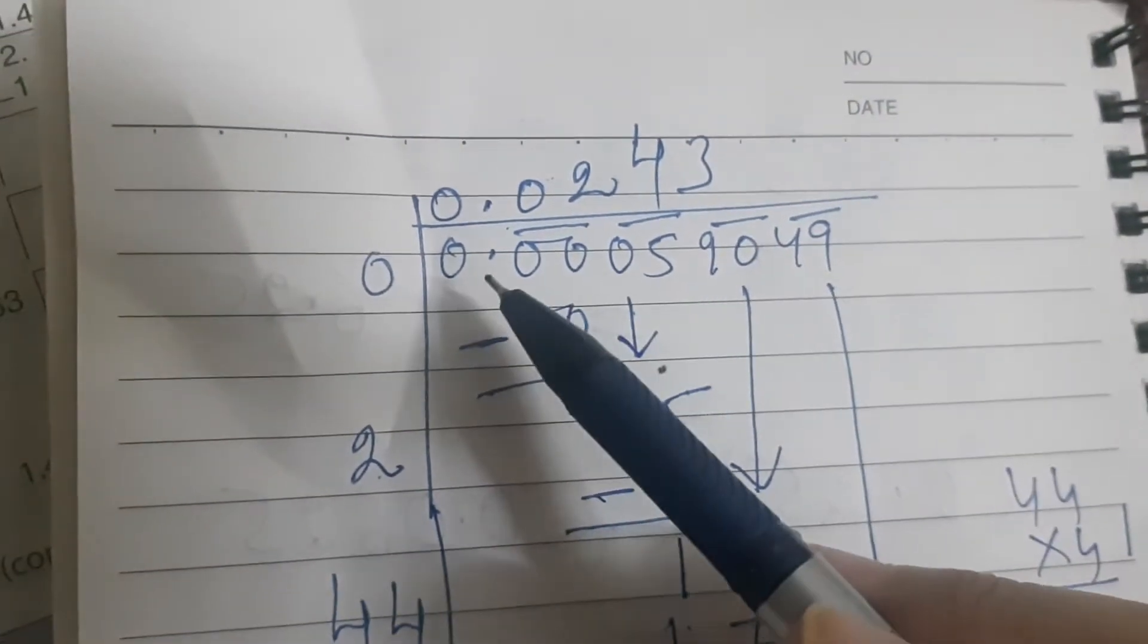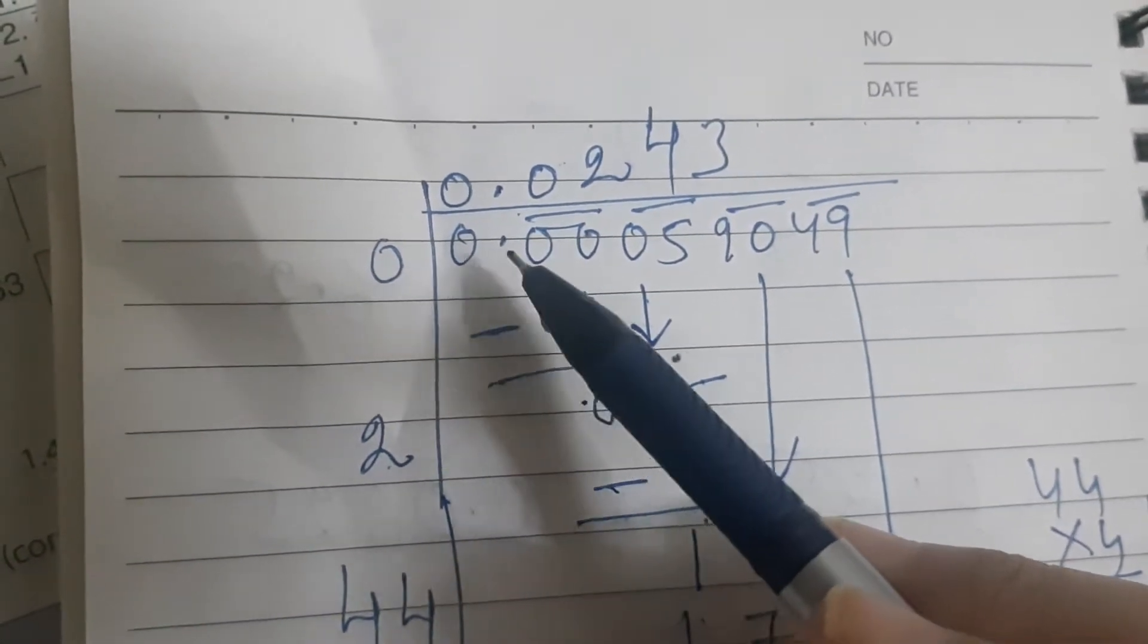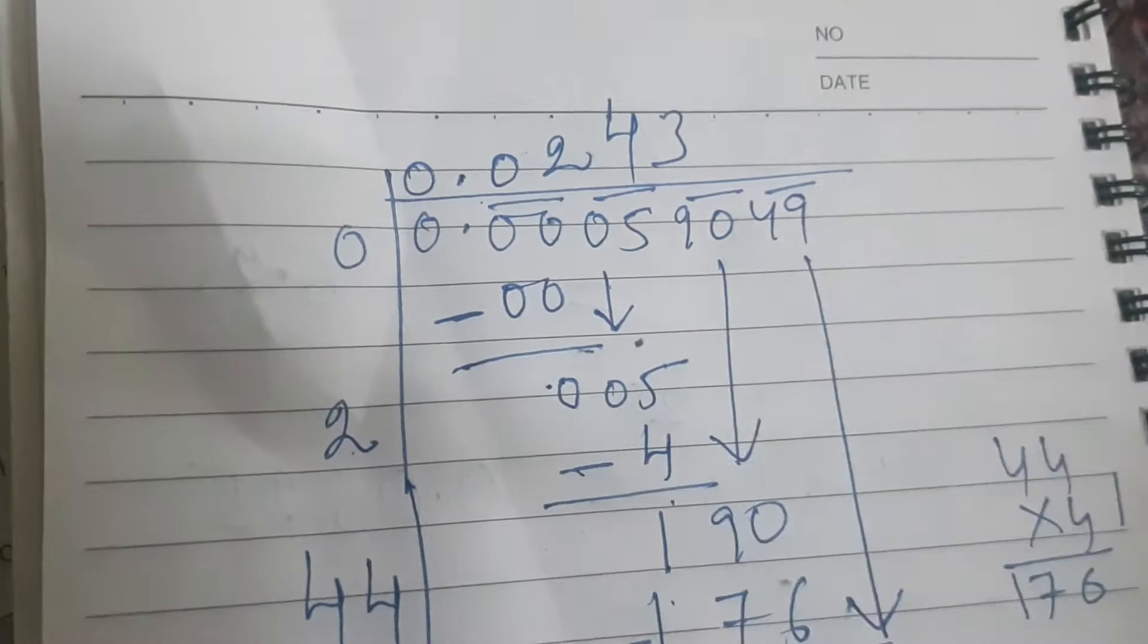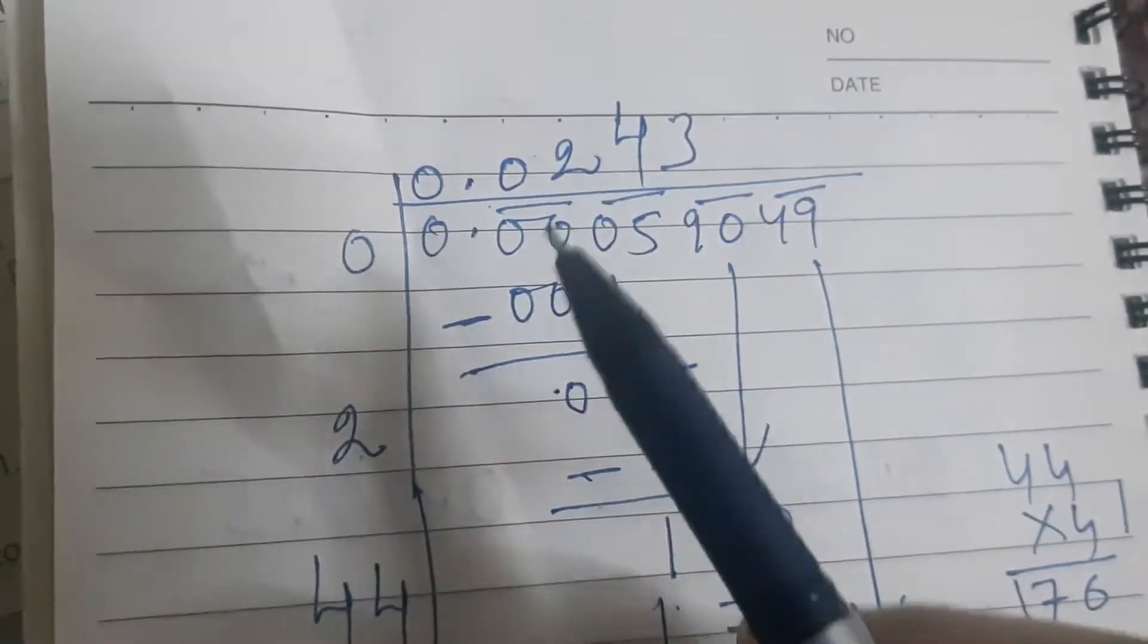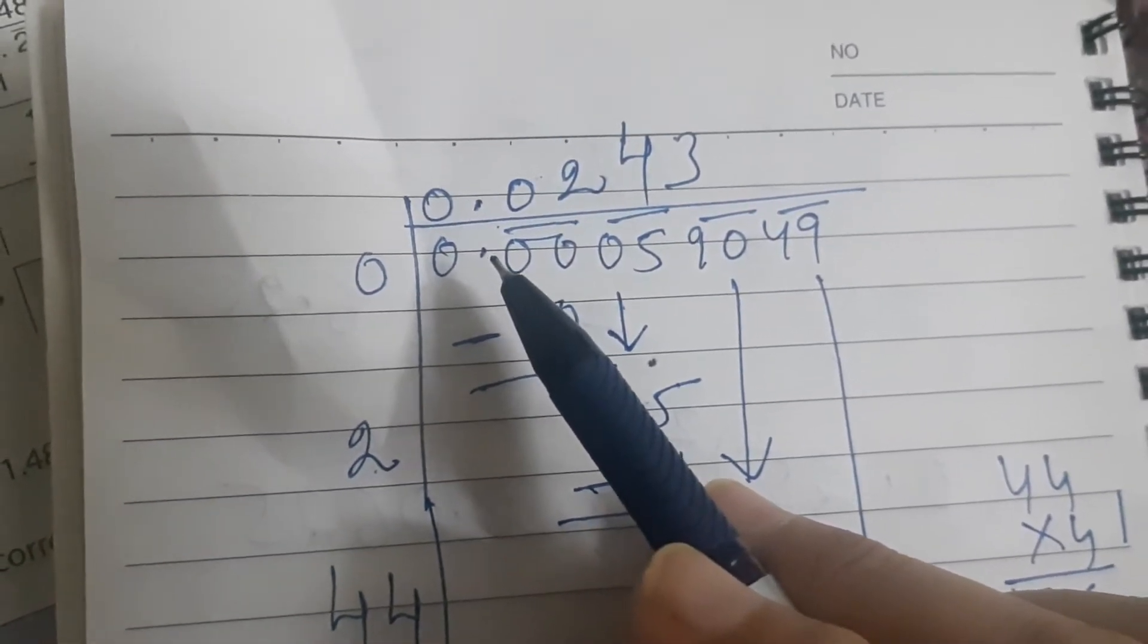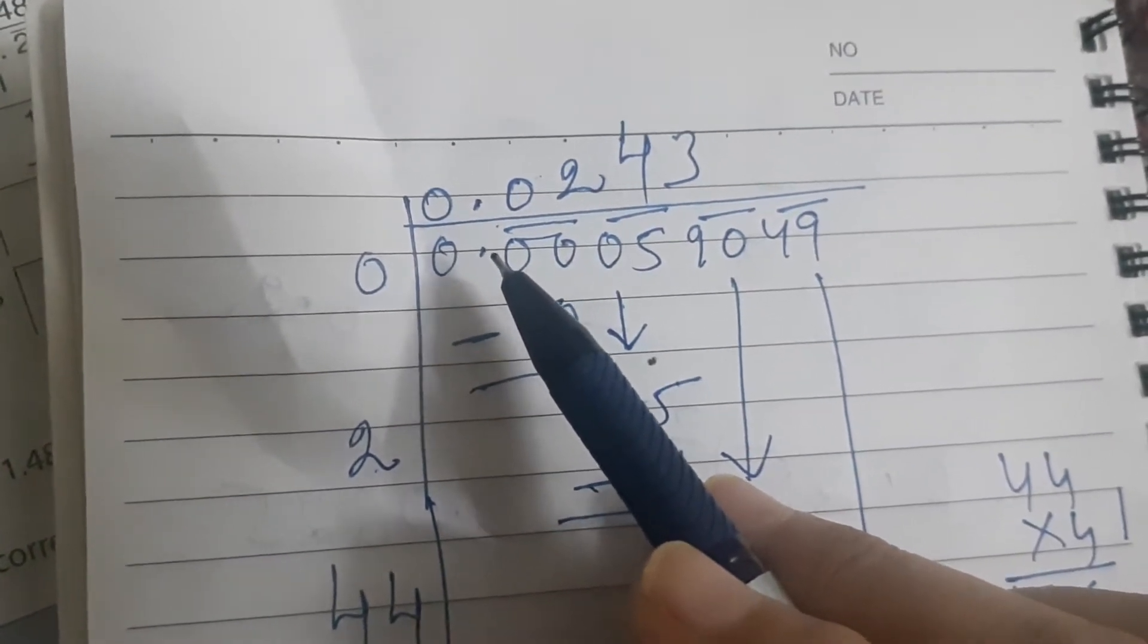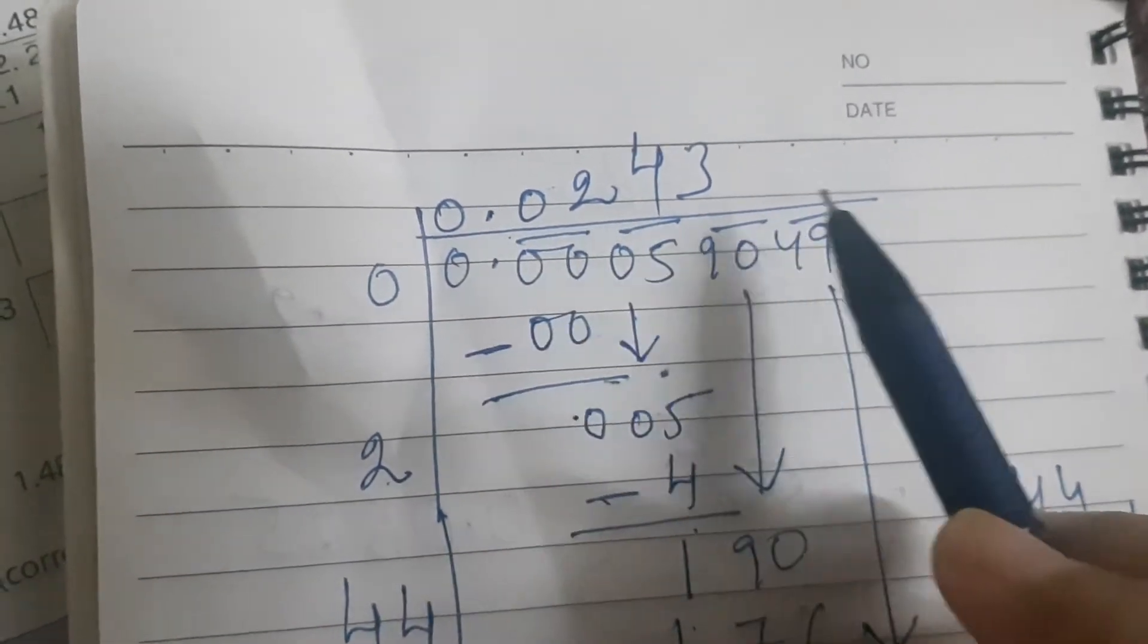Now observe carefully, we have to find the square root of 0.00059049. In my previous class, I have shared with you that when we are finding the square root of a decimal number, then we have to mark the periods for the numbers which is after the decimal number from left to right.